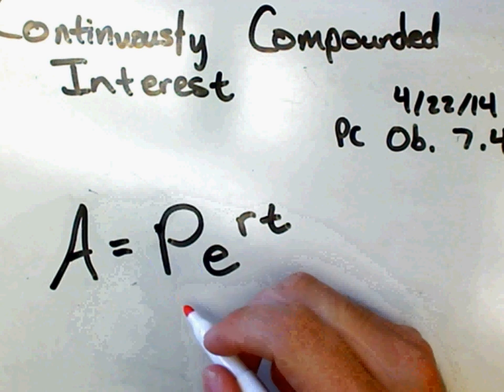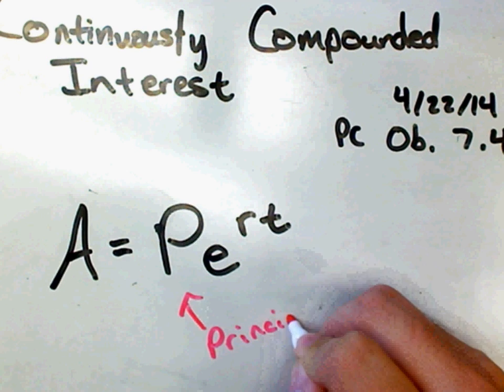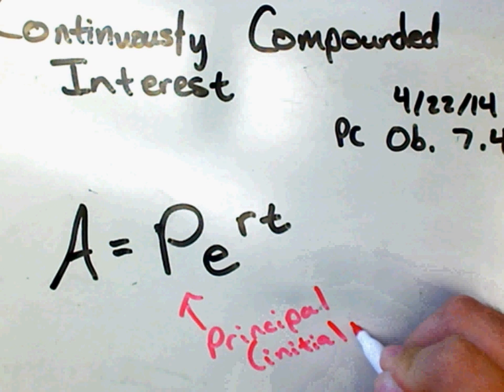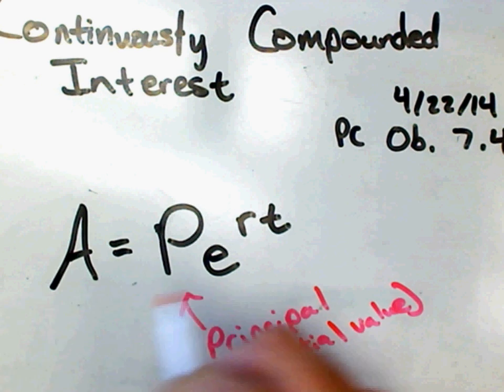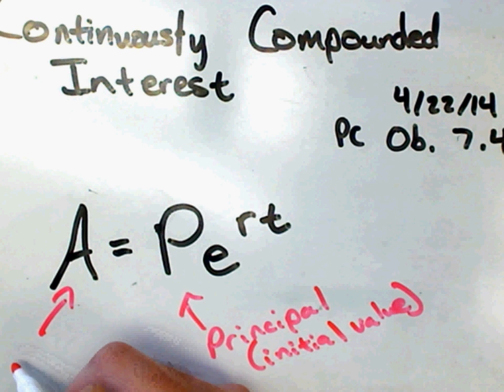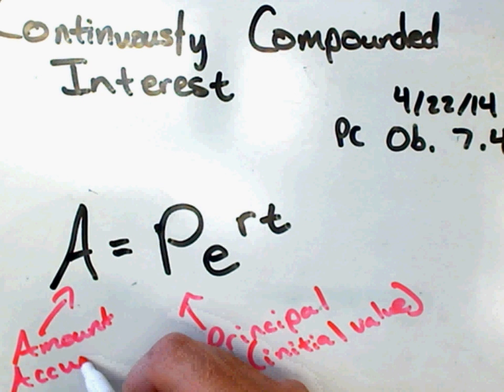It's very similar to the regular compound interest formula. We still say that P is our principal, which of course, the principal is your initial value. A is going to be the amount that we accumulate, which will be our final value.